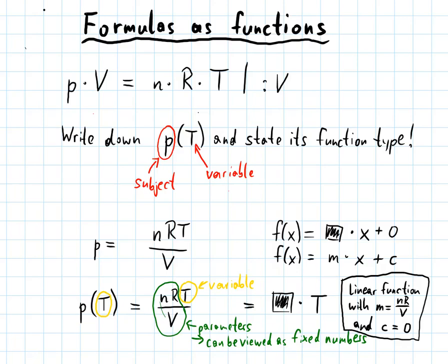Let's do another example. Another formula that you probably know from physics. E equals m times c squared. So this is energy equals mass times the square of the speed of light. And you may want to know the function type e of c. And in this case, you don't even have to rearrange the formula because it's already e equals m times c squared.